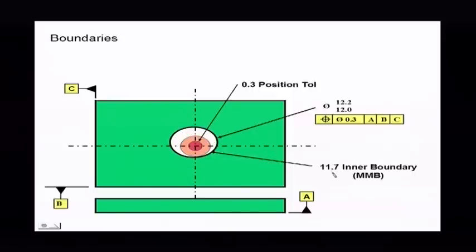What they call that in the standard is the inner boundary. The inner boundary of 11.7 is just the smallest hole minus the position of 0.3. In the new standard, they call it an MMB, a maximum material boundary. So the maximum material boundary is the smallest hole minus the amount of position that it has.